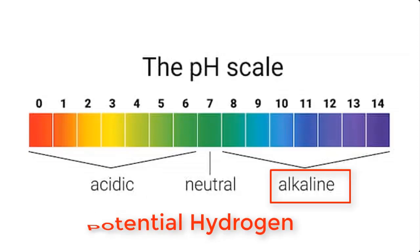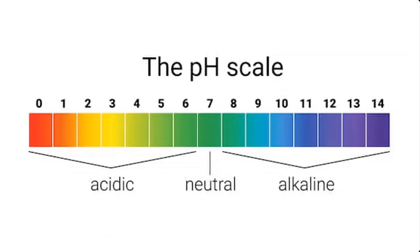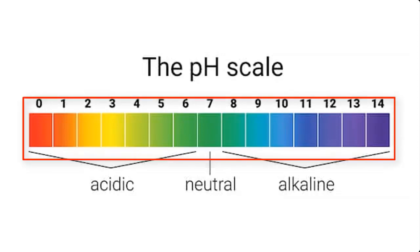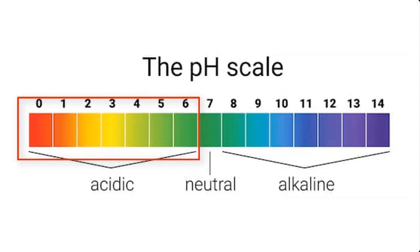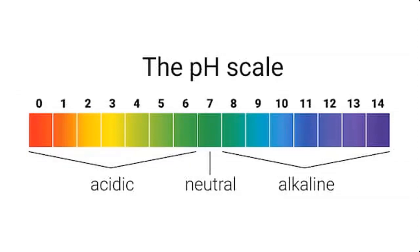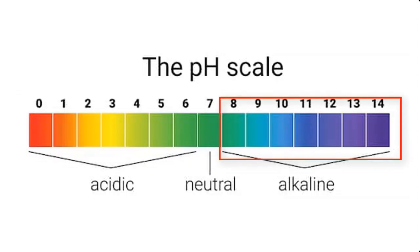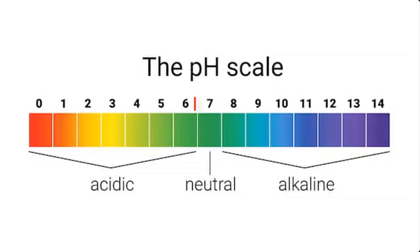is a term used to describe the degree of acidity or alkalinity of a solution. A solution can either be acidic, alkaline, or neutral. An example of a neutral solution is water. pH is expressed on a number scale ranging from 0 to 14. 0 to 6 is the acidic part of the scale, and 8 to 14 is the alkaline part of the scale, while 7 stands for neutral.